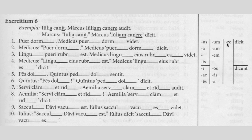Subjects here, direct objects here, infinitives here, and either 'dicit' or 'dicunt' depending on who the subject is. We start with a simple statement: the boy sleeps — 'puer dormit.' Then we turn it into what is called an indirect statement: the doctor sees that the boy is sleeping, or the doctor sees the boy sleep.